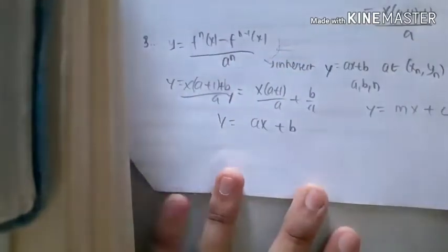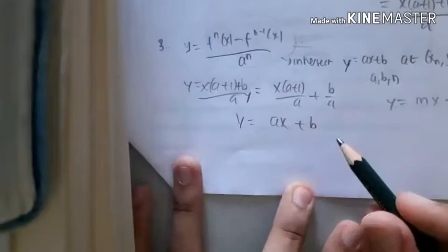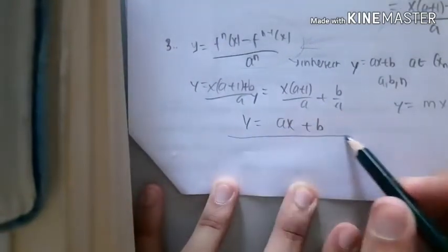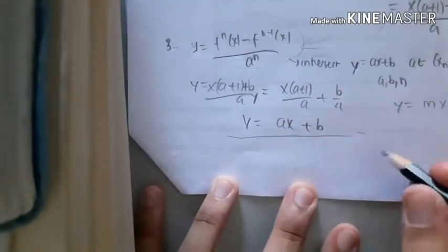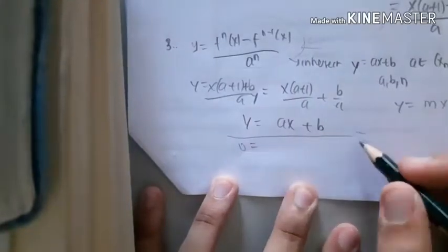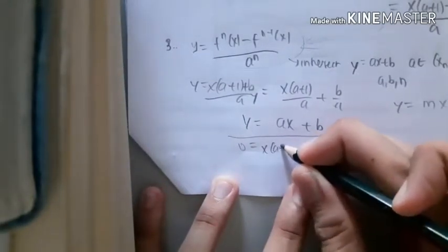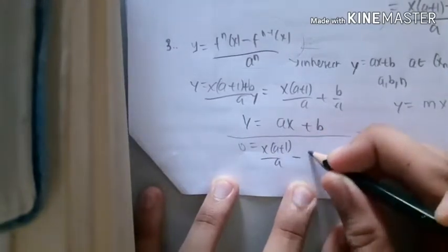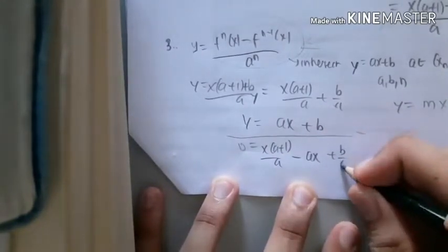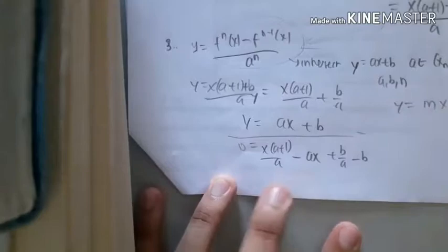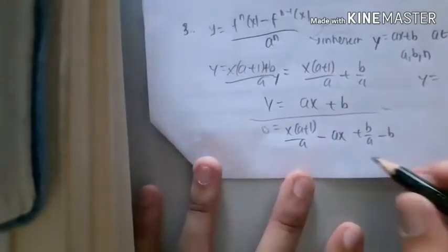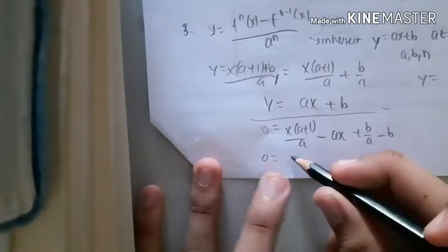And now we want to find the point of intersection with ax plus b. Now we only eliminate it. Now we can find x first, right? By subtracting it using the elimination method, y minus y is 0. Now we can get the x. So it is only x of (a+1)/a minus ax plus b/a minus b. Now you should know what x is, so we can change that.